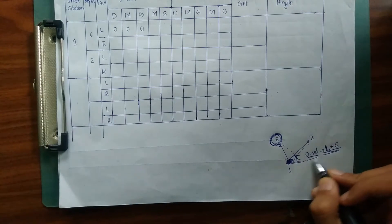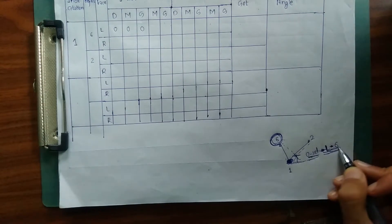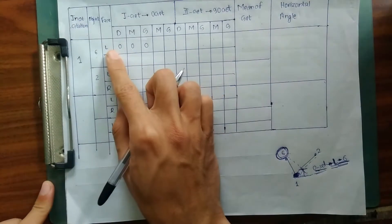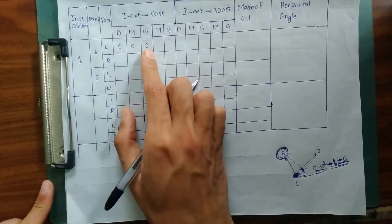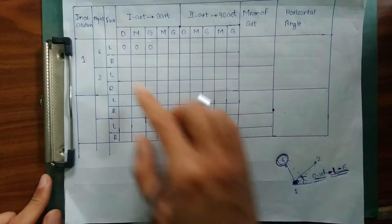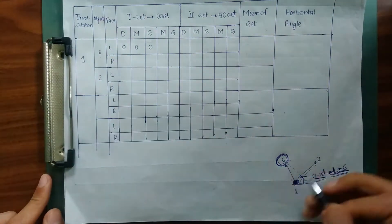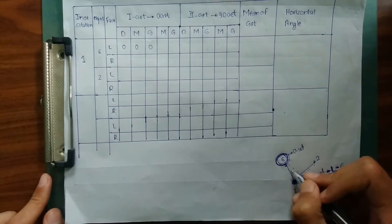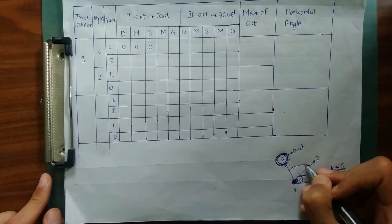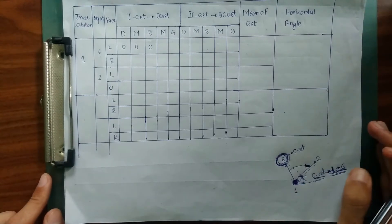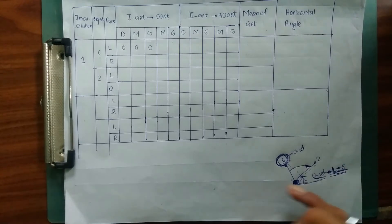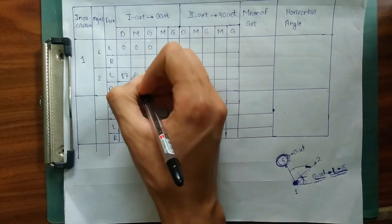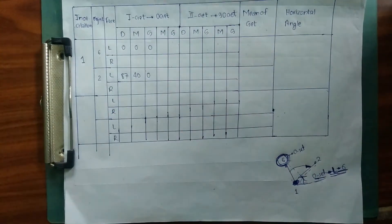I have done my 0-set with face left condition for instrument station 6. I have written 0 degrees 0 minutes 0 seconds — that is degrees minutes seconds — with face left condition for station 6. After doing the zero set, I shifted my theodolite over to instrument station 2 and observed my angle, finding it to be 87 degrees 40 minutes 0 seconds.